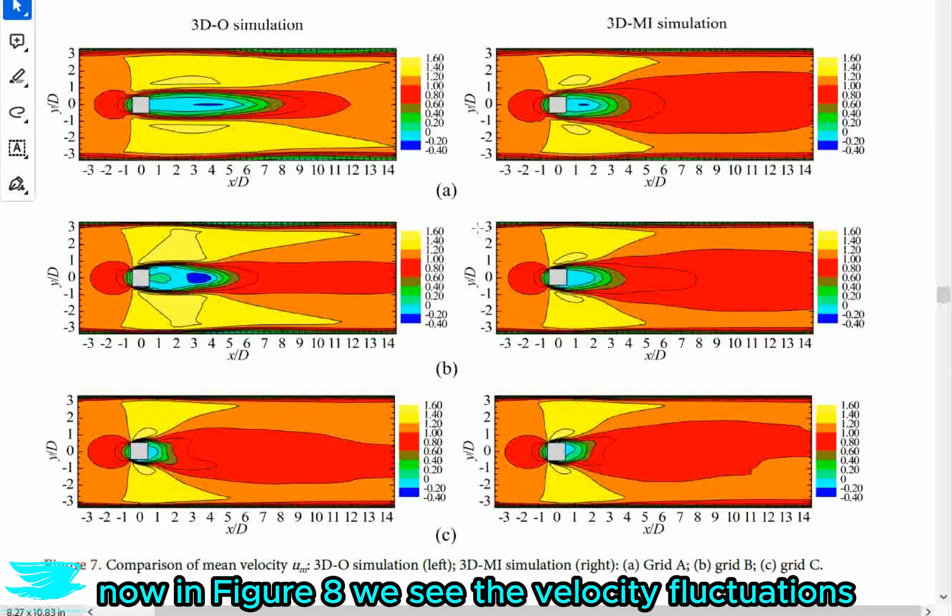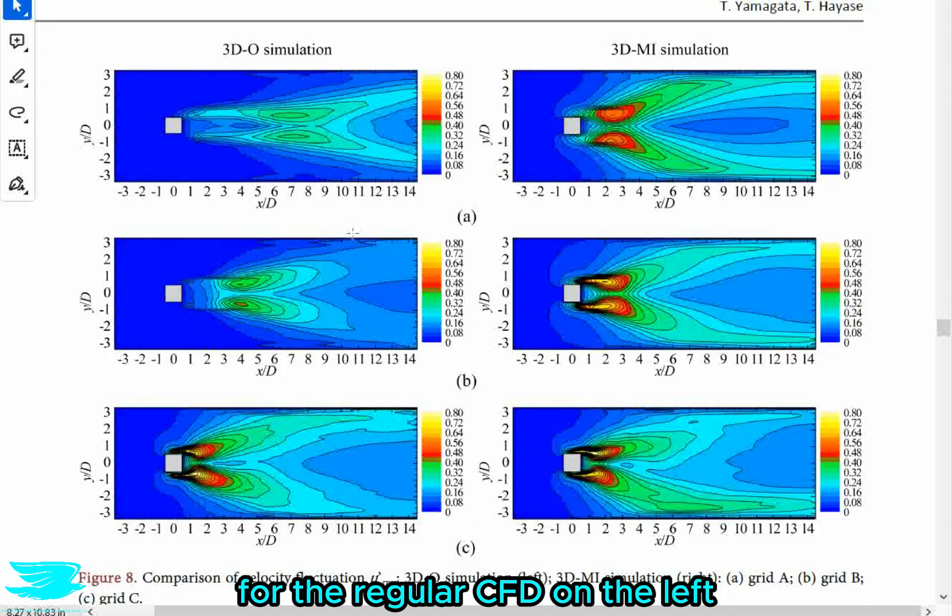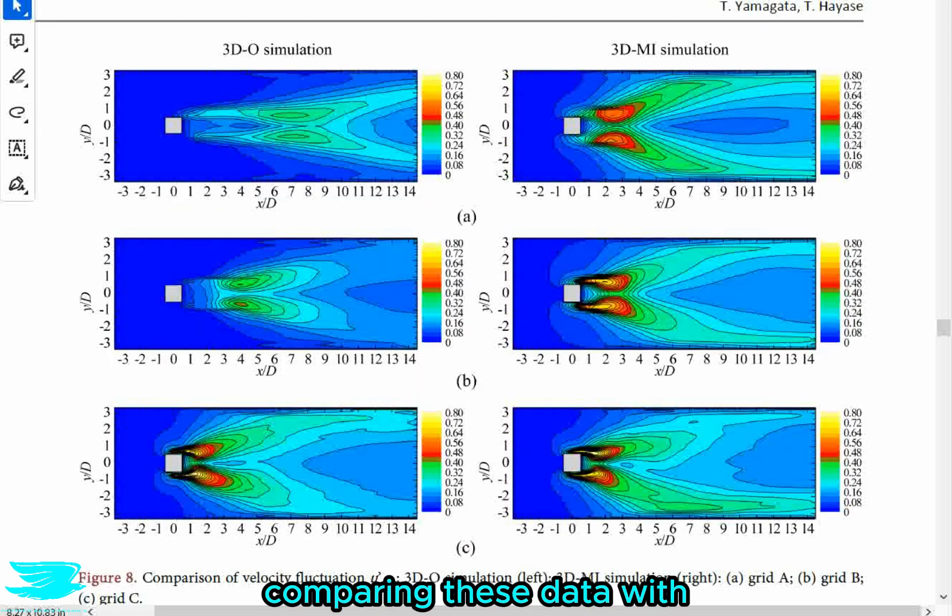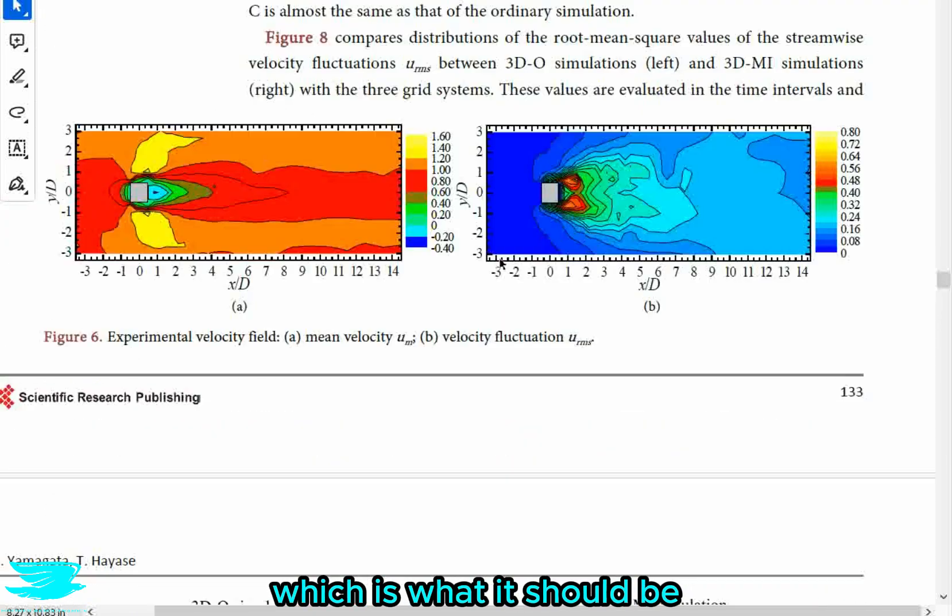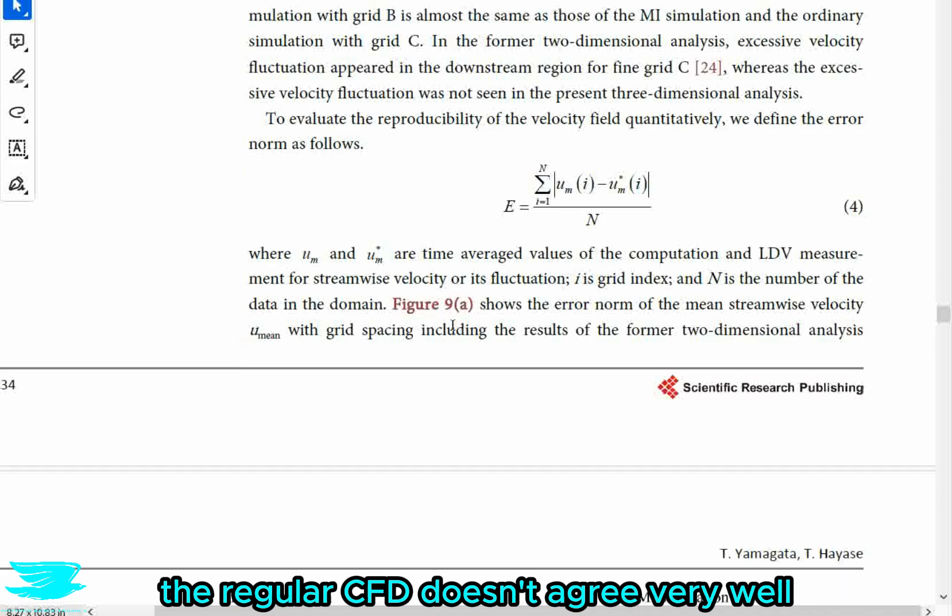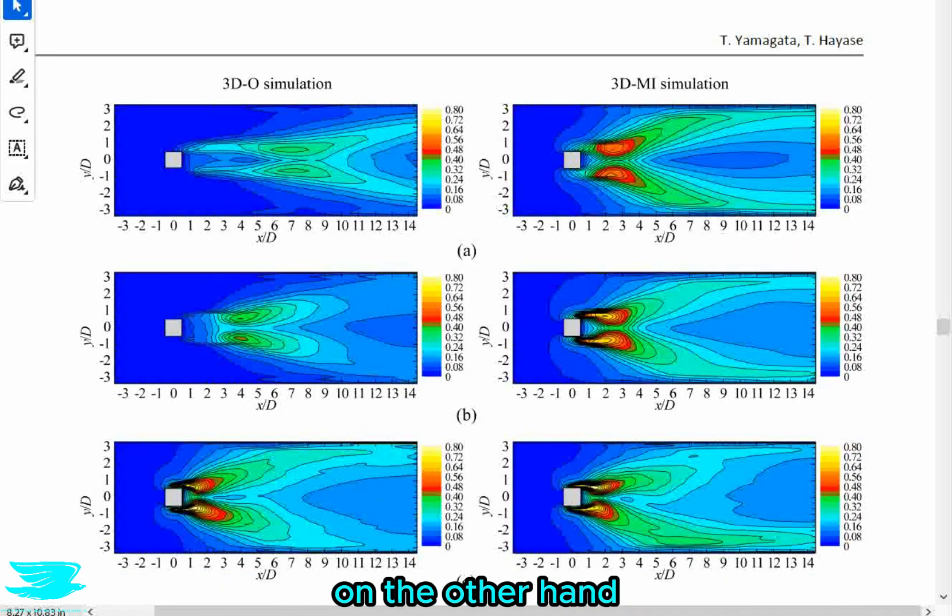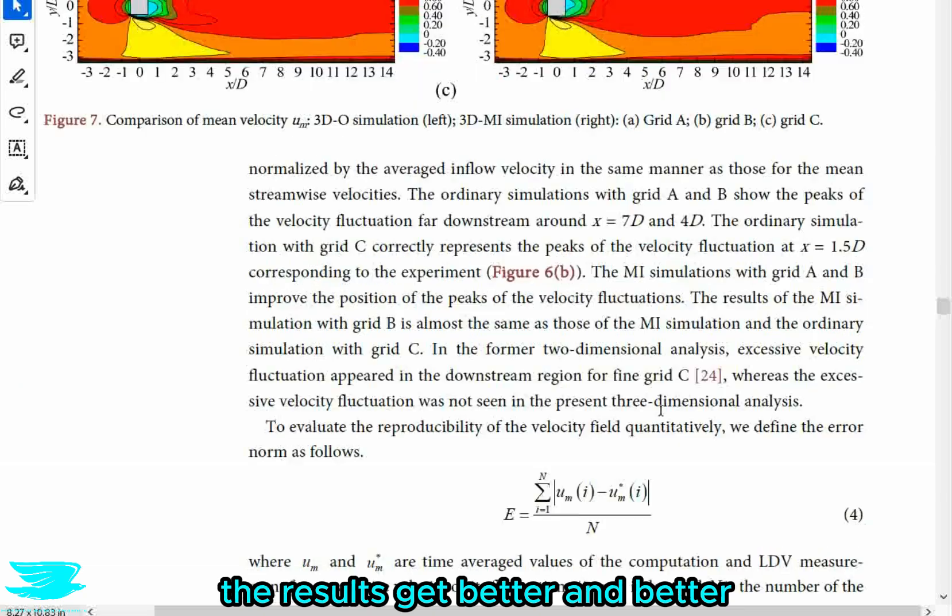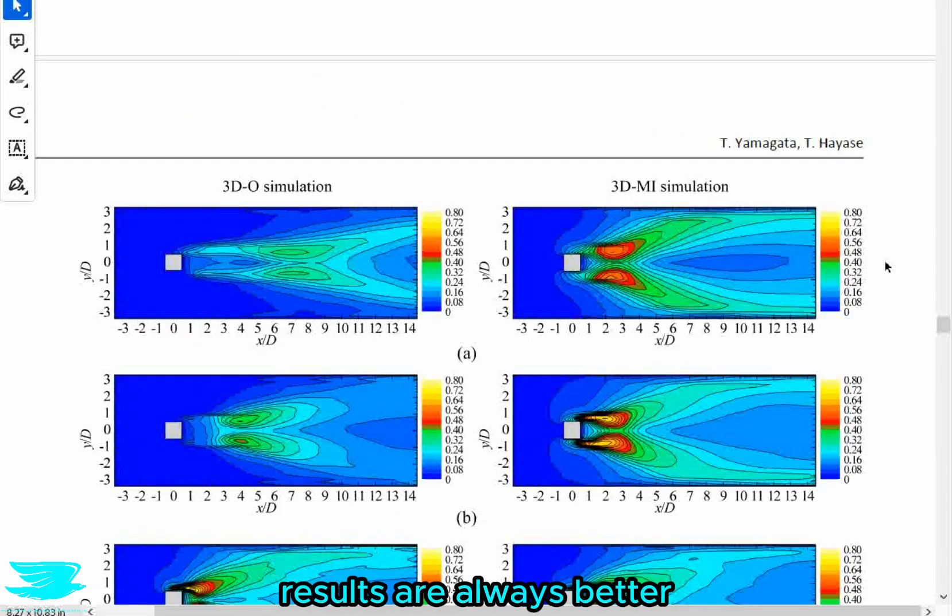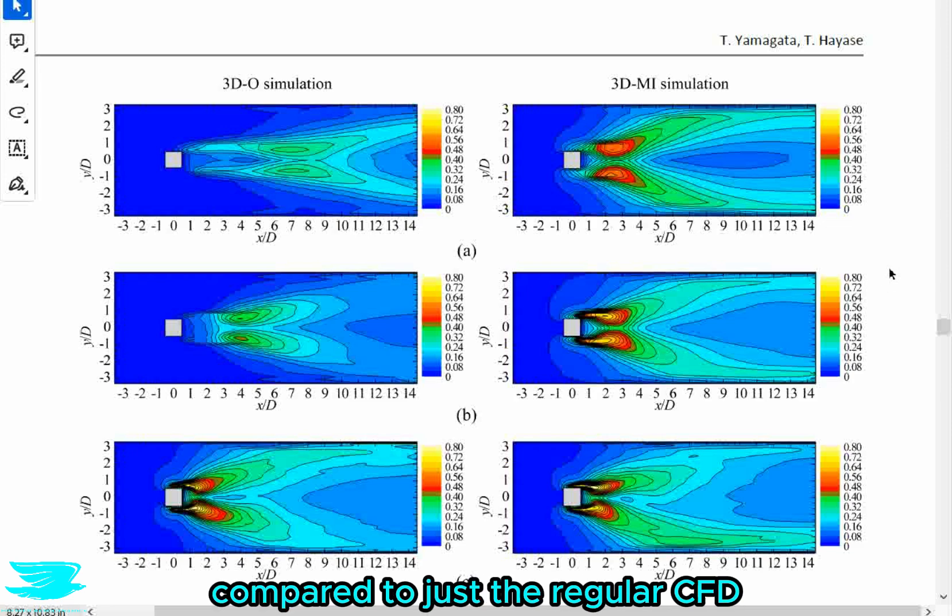Now in figure eight, we see the velocity fluctuations for the regular CFD on the left, and for the CFD MI on the right. Comparing these data with experimental data in figure six B, which is what it should be, the regular CFD doesn't agree very well until we get to the very fine mesh. On the other hand, the CFD MI agrees quite well already for the coarse mesh. And as you get finer, the results get better and better. So that shows that the CFD MI results are always better compared to just the regular CFD.